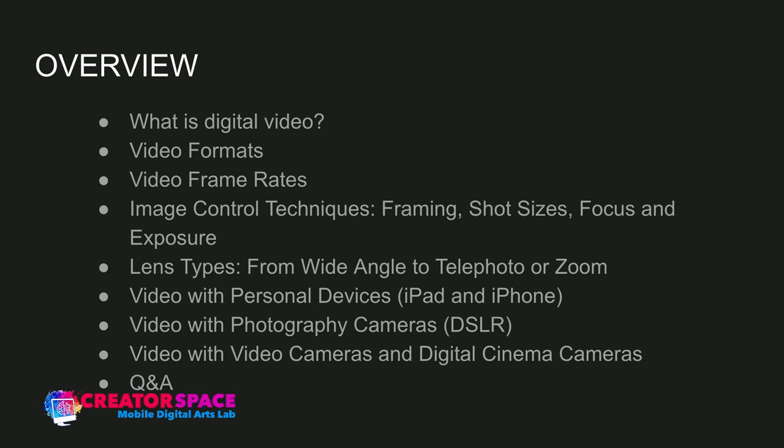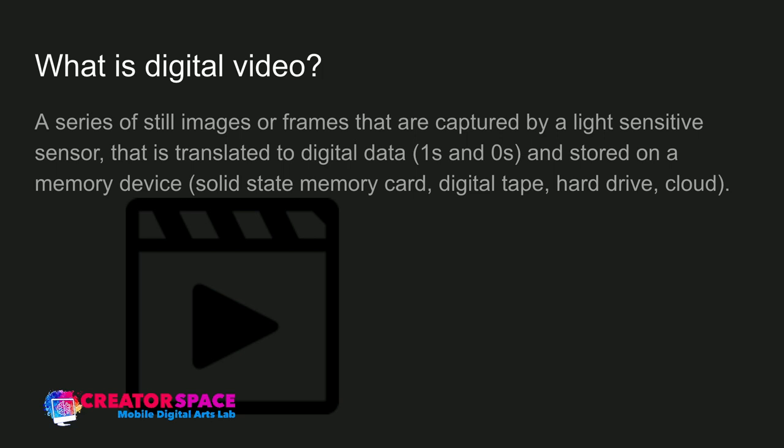So what is digital video? Digital video is a series of still images or frames captured by a light-sensitive sensor, translated to digital data — ones and zeros — and stored on a memory device: a solid-state memory card, digital tape, hard drive, or cloud storage. Individual frames are captured and played back as a series of images to replicate motion. This goes back to 1895 and the beginning of cinema — capturing 24 individual photos and playing them back at 24 frames per second to make things appear to move.